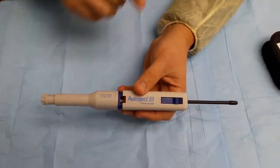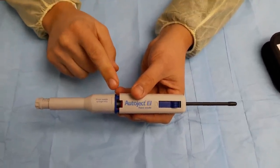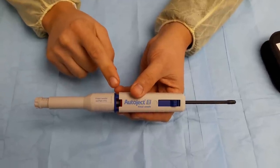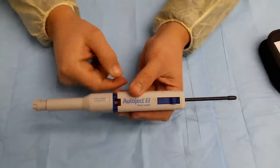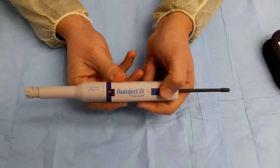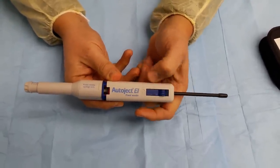The auto injector has a safety device which is seen in the window. While the window is red, the auto injector will not work. If you press on the button, it will not work.